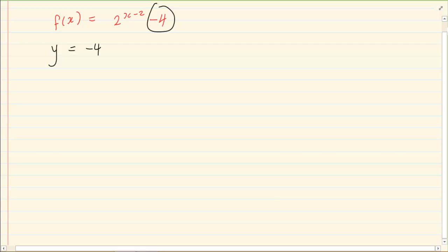Now how do we do the x intercept? x intercept means y is equal to 0. This is where all your exponential rules come in. So we have 0 is equal to 2 to the power of x minus 2 minus 4. Bring my 4 over. I have got 4 is equal to 2 to the power of x minus 2. Now we are going to get the same base. So we have 2 to the power of 2 is equal to 2 to the power of x minus 2.